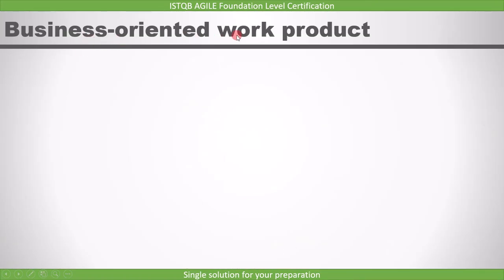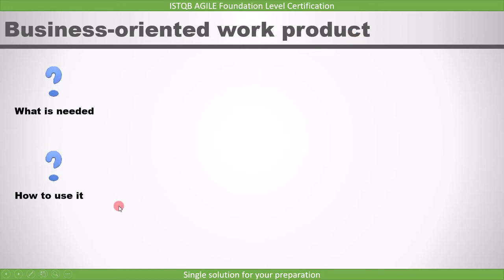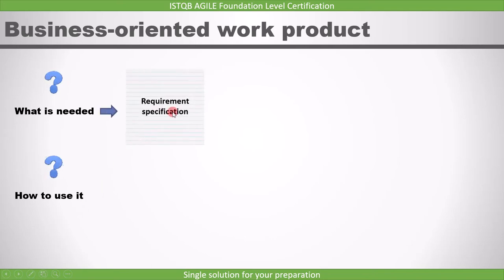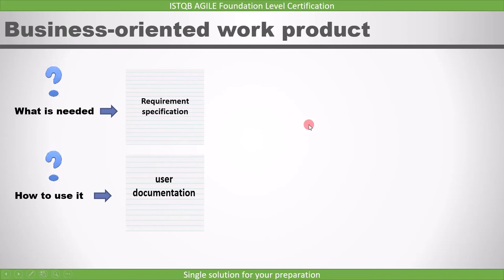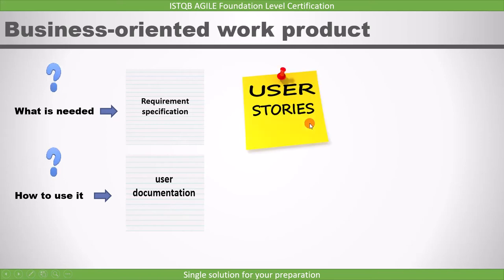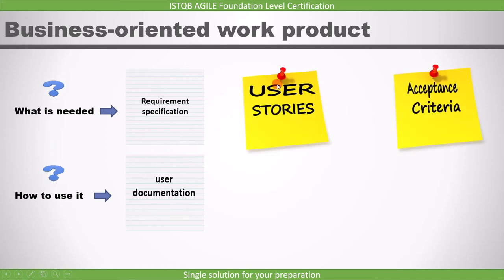First is the business-oriented work product, and it describes what is needed and how to use it. For example, a requirement specification describes what is needed, and user documentation describes how to use it. Typical business-oriented work products on agile projects include user stories and acceptance criteria.